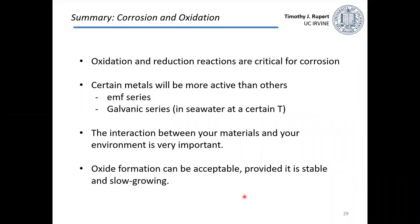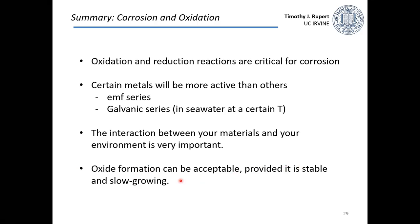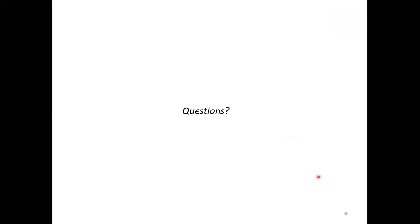To summarize the corrosion and oxidation discussion: oxidation and reduction reactions are the critical events driving corrosion. Certain metals are more active than others, and the EMF series and galvanic series are two ways to rank materials. The interaction between your material and the environment is the critical factor, and oxidation isn't necessarily unacceptable — it can be fine as long as it forms a stable, slowly growing oxide. With that, we'll finish up for today and I'll see you in a Q&A session.